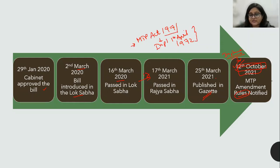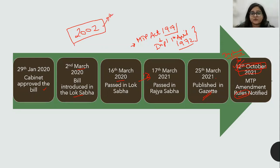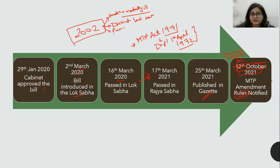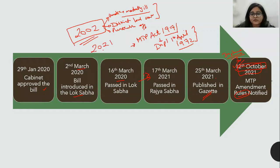The original MTP Act came in 1971 but was implemented on 1st April 1972 — this has come as an exam question previously. Following that, there was one amendment in 2002 which did not have very significant changes: they changed the terminology from 'lunatic' to 'mentally ill,' decentralized it so district-level committees were made, and made it a punishable offense if an unrecognized person or unrecognized place performed MTP.